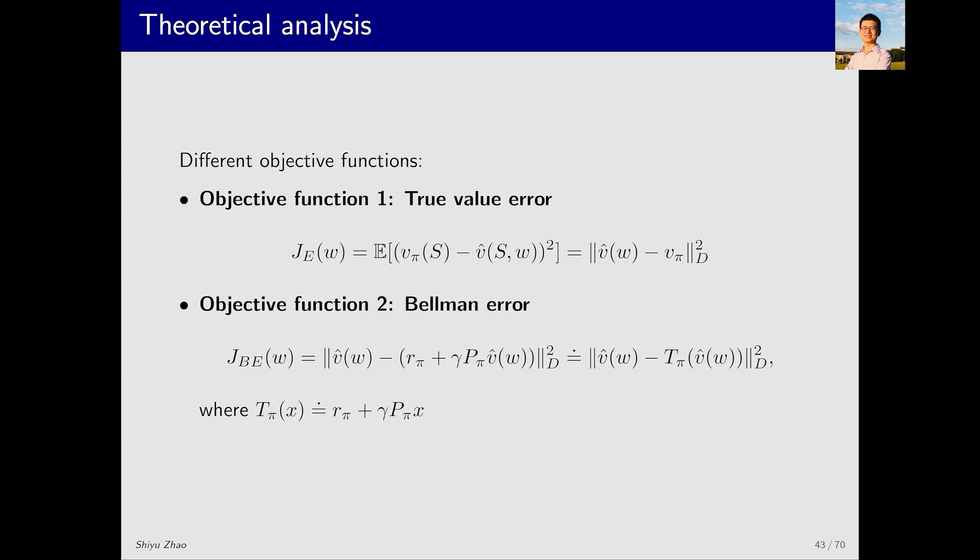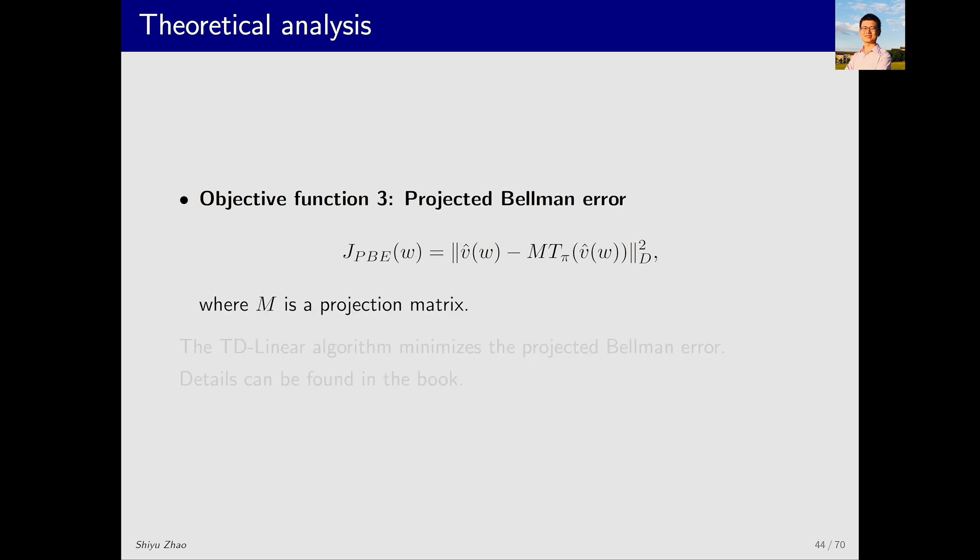In addition to this objective function, there's another one called the Bellman error. What does this mean? It means that we want v hat to approximate v pi. v pi satisfies the equation v pi equals r pi plus gamma p pi v pi, which is the Bellman equation. If v hat equals v pi, then v hat should also satisfy this equation. v hat equals r pi plus gamma p pi v hat. This can be written as a function t pi v hat. In theory, they should be equal. If they are not equal, then we minimize this error, which is called the Bellman error. Beyond this, there's another objective function, which is what the algorithm actually aims to minimize. What is it? It's the projected Bellman error. It includes the previous part, but with an additional projection matrix. What does this mean?